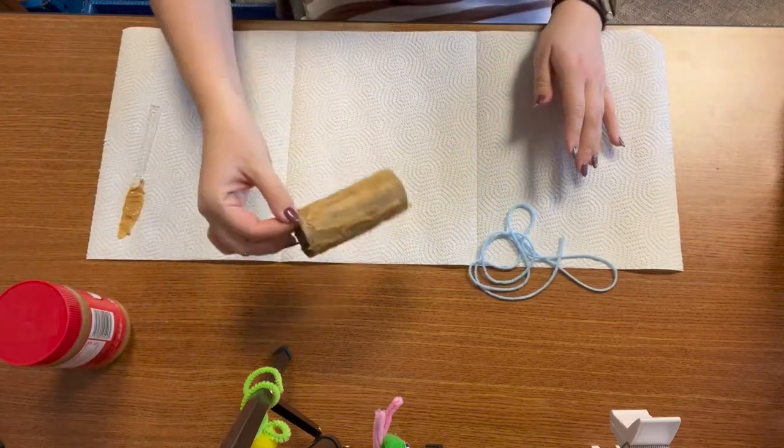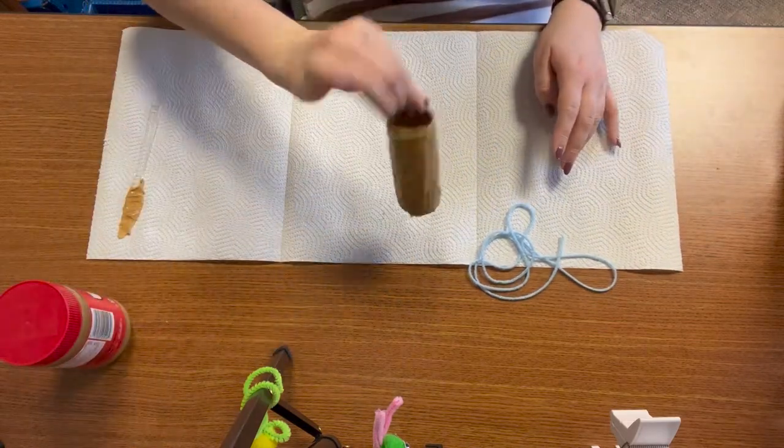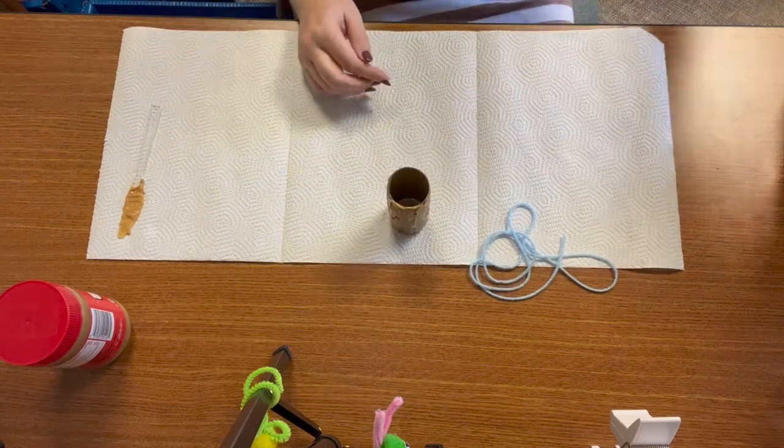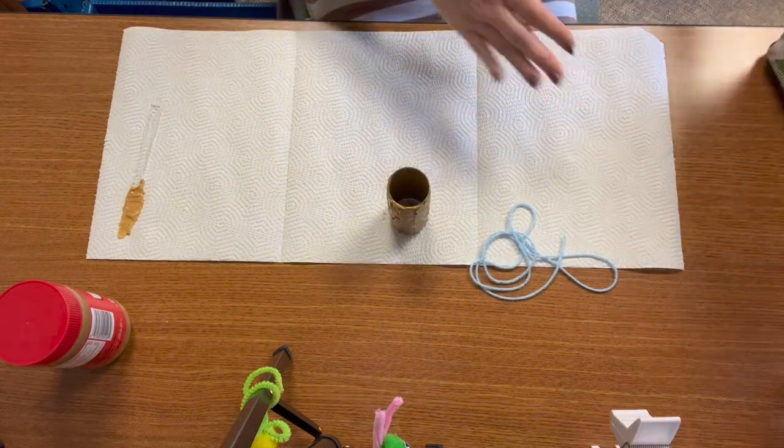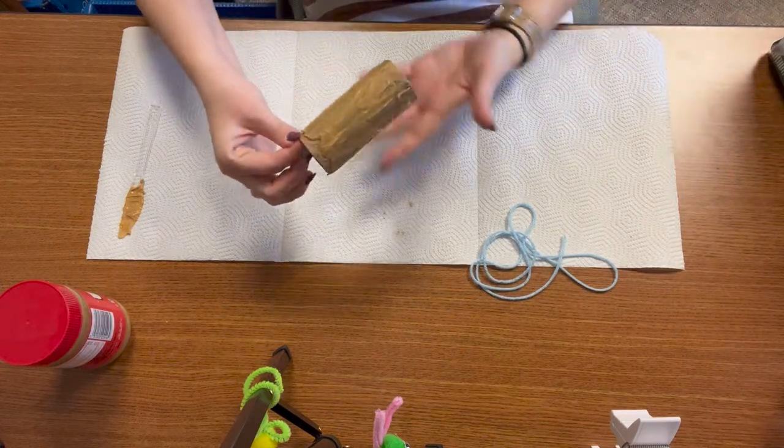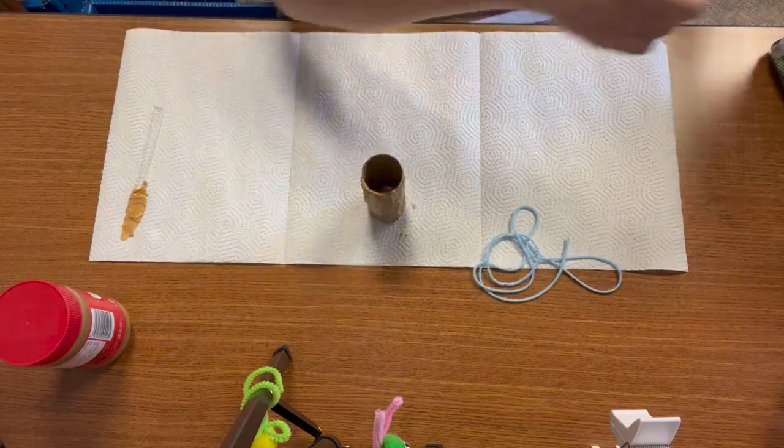So now that my toilet paper roll is all smeared in peanut butter, the next thing I'm going to do is take my bird feed and put it all over where I just smeared in peanut butter.